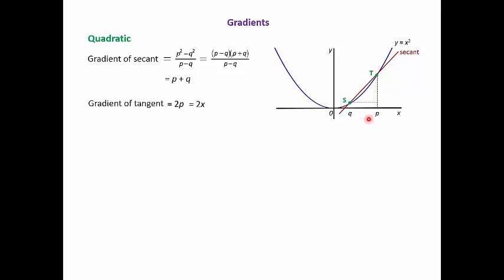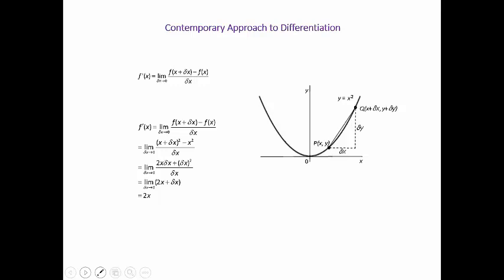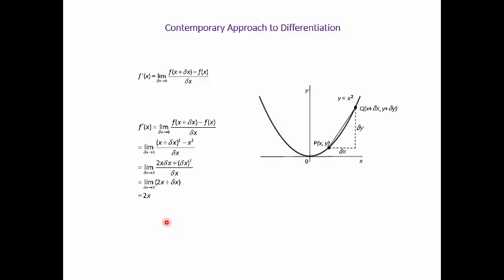For the tangent gradient, we put Q equal to P in our secant formula, giving P plus P equals 2P, or since P is just an x-coordinate, the gradient of the tangent is 2x. So for y equals x squared, you simply double the x-coordinate to get the gradient at that point. The traditional proof involves limits, delta x, delta y — quite intricate symbolism — but it arrives at the same result, 2x, for the gradient of y equals x squared.